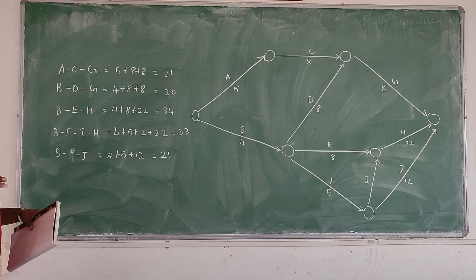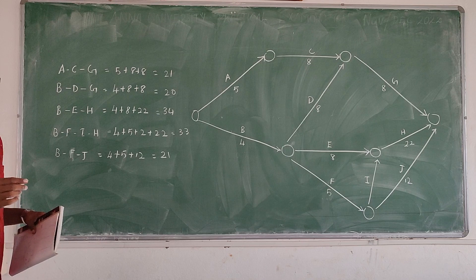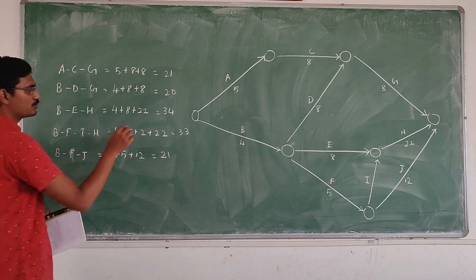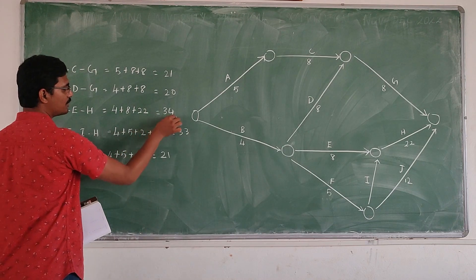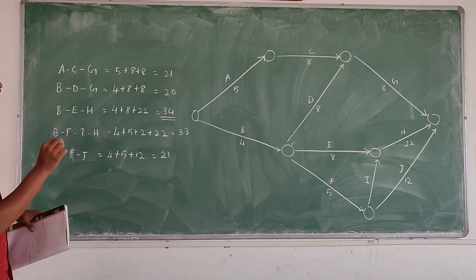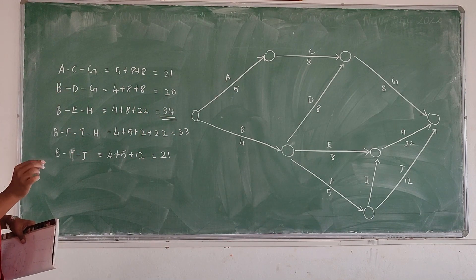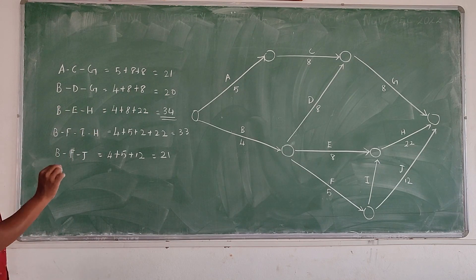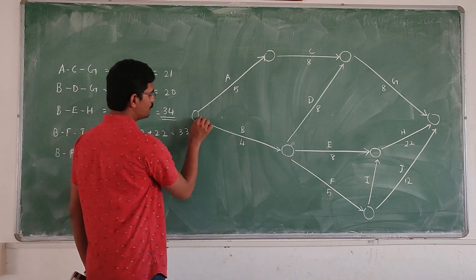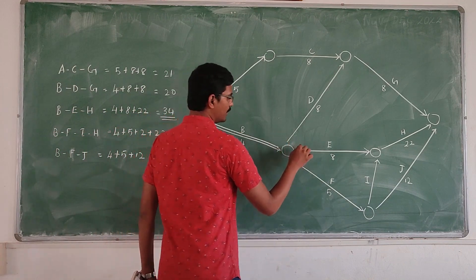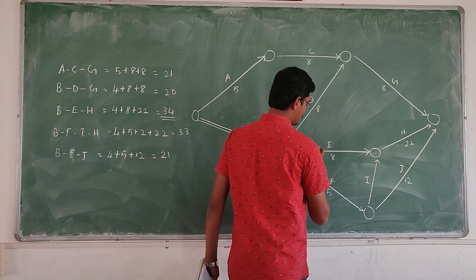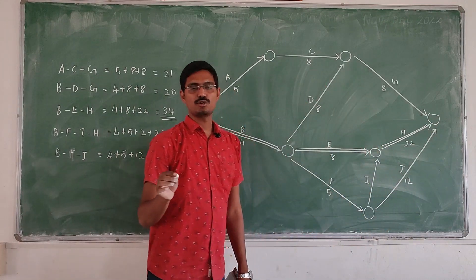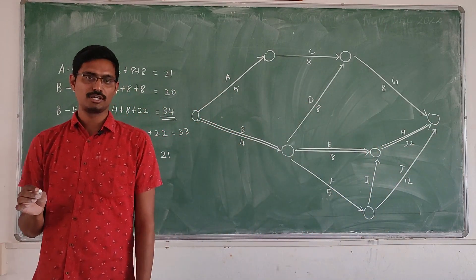The critical path is the path containing the maximum duration, and that duration is the critical duration. 34 is the maximum path duration, so this path is the critical path and 34 is the critical duration. The critical path is B, E, H — we draw a double line on B, E, and H. This is the method we use to solve the problem. We will see the next video. Thank you.